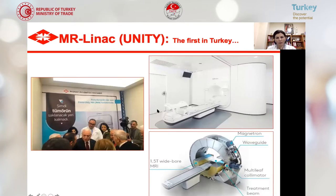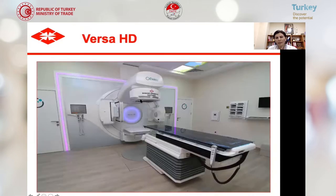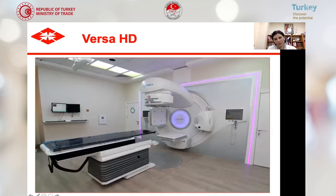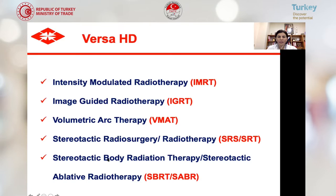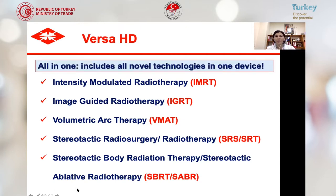Elekta Unity is the first of its kind in Turkey. Here you see our opening ceremony. Versa HD is a high-quality radiation oncology machine — a very technologically advanced linear accelerator. Versa HD can perform all kinds of radiation oncology treatment techniques, including intensity-modulated radiotherapy, image-guided radiotherapy, volumetric arc therapy, stereotactic radiosurgery, stereotactic radiotherapy, stereotactic body radiation, also called stereotactic ablative radiotherapy. It includes all novel technologies in one device.